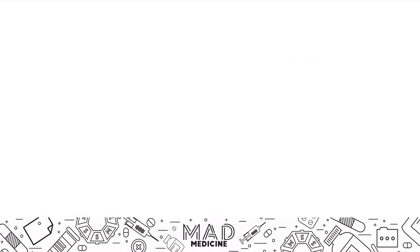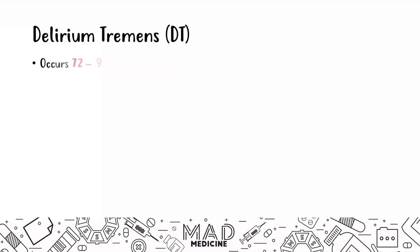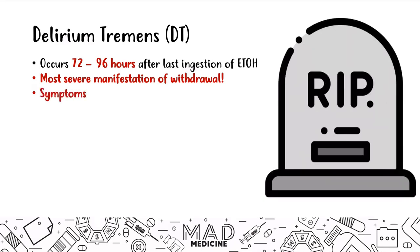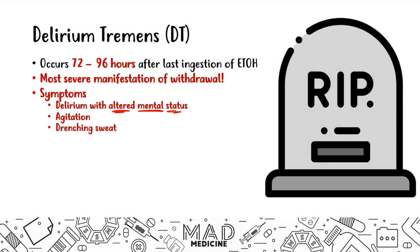The final psychiatric emergency in this lecture is delirium tremens. Delirium tremens occurs 72 to 96 hours after a chronic alcohol-dependent patient last ingests alcohol — it only happens in chronic alcohol abusers. This is the most severe manifestation of alcohol withdrawal, and when treating alcohol withdrawal, preventing DTs is the main goal. Symptoms include delirium with altered mental status, agitation, drenching sweat, fever, and autonomic hyperreactivity like hypertension and tachycardia.